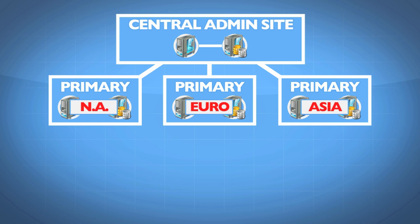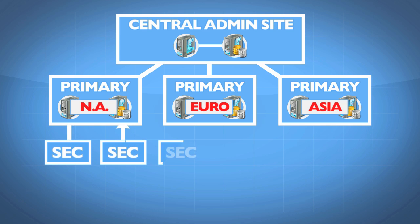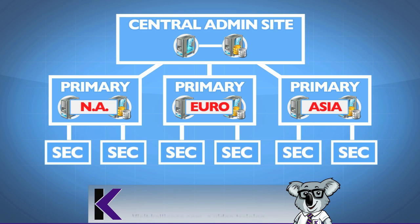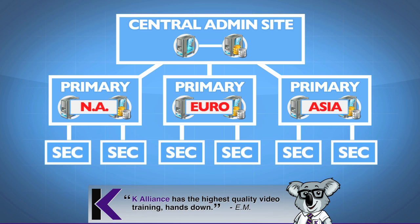Below each of the primaries we could create secondary sites. For example, in North America our main offices are in New York but we have a branch office in Dallas with around 500 users. We might create a secondary site in Dallas because the WAN connection is fairly unreliable. Those 500 clients assigned to that secondary site get all their information directly from the site systems at that secondary location, and we control what flows across that bandwidth — including management points and distribution points. Every bit of client communication can be isolated to that secondary location.